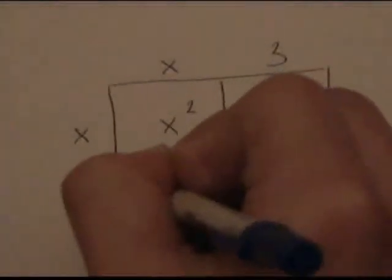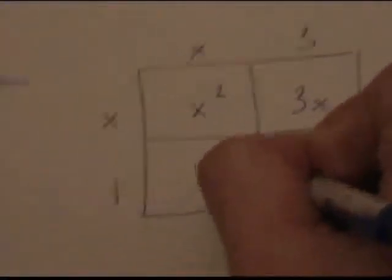What we do is we multiply the different parts of the binomial and put them in these boxes. So first you have x times x, or x squared. Then 3 times x, or 3x. Then 1 times x, or 1x. And finally 3 times 1, or 3.